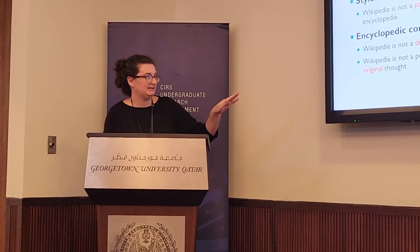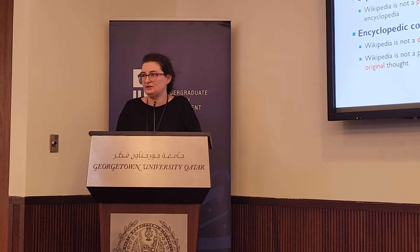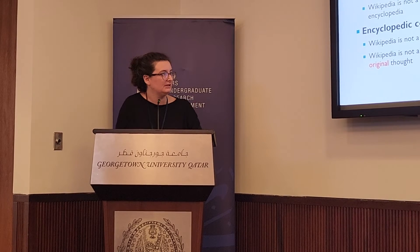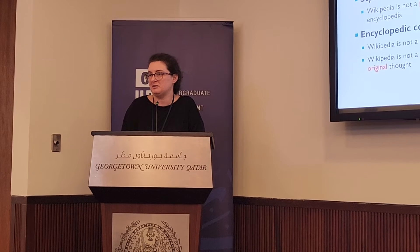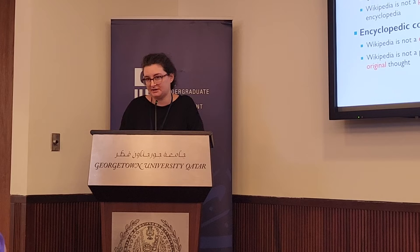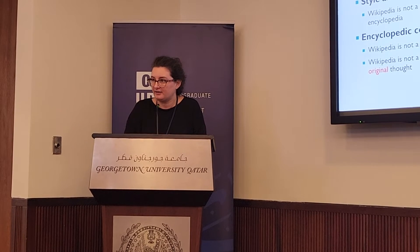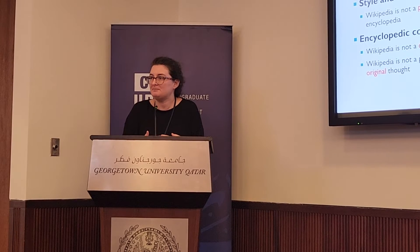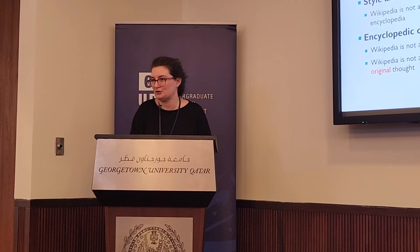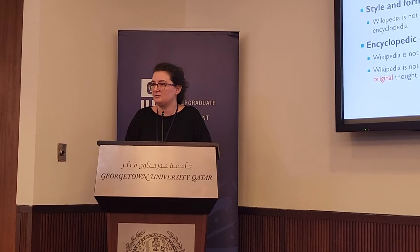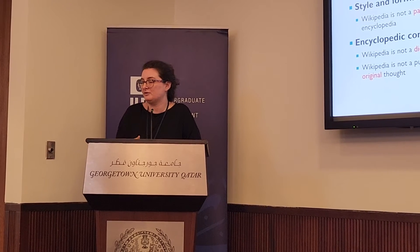Encyclopedic content means it's not a dictionary. When you create an article, you don't only give a definition of the event, person, or phenomenon — you can include definitions from different sources, multiple ones, to clarify the content you are creating. Wikipedia is also not a publisher of original thought, which means everything you write needs to have something already published about it and you need to reference it. If you have a great personal experience or a family member who lived through historical events, that's great, but Wikipedia is not the place to write about it — you should back everything up with evidence given in references or links.